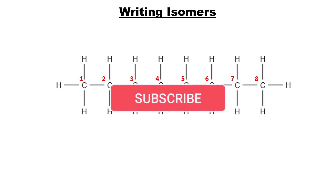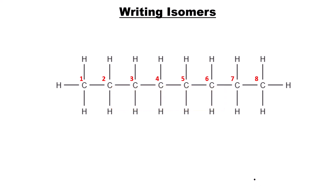Welcome to this lesson on writing isomers of alkanes. The example I'll be using is C₈H₁₈, the molecular formula of an alkane with eight carbon atoms and 18 hydrogen atoms. You might be given a question with a molecular formula like this and asked to write all possible isomers. Stick with us to the end and I'll show you the tricks involved in writing all possible isomers — skills you can apply to any other alkane.